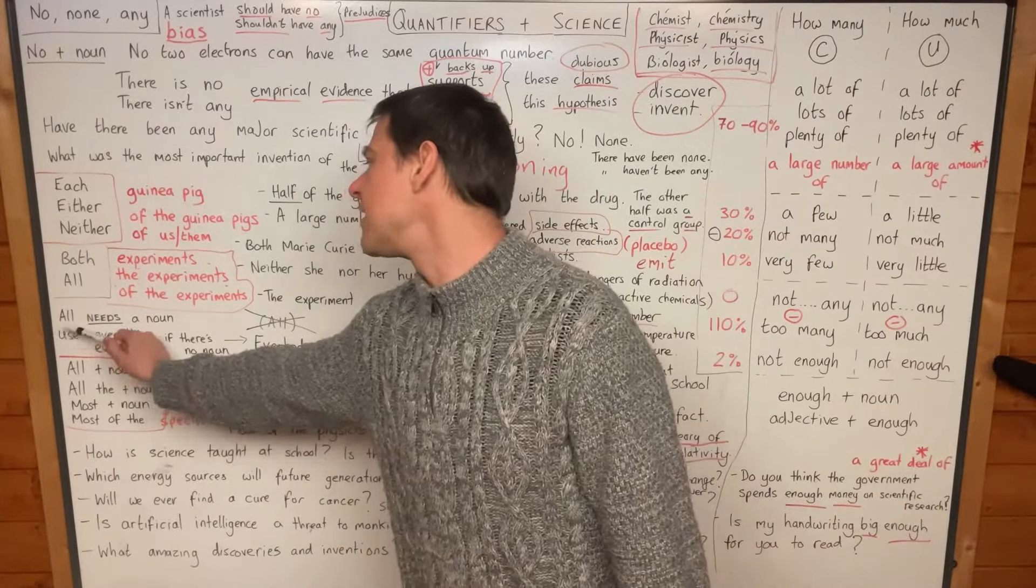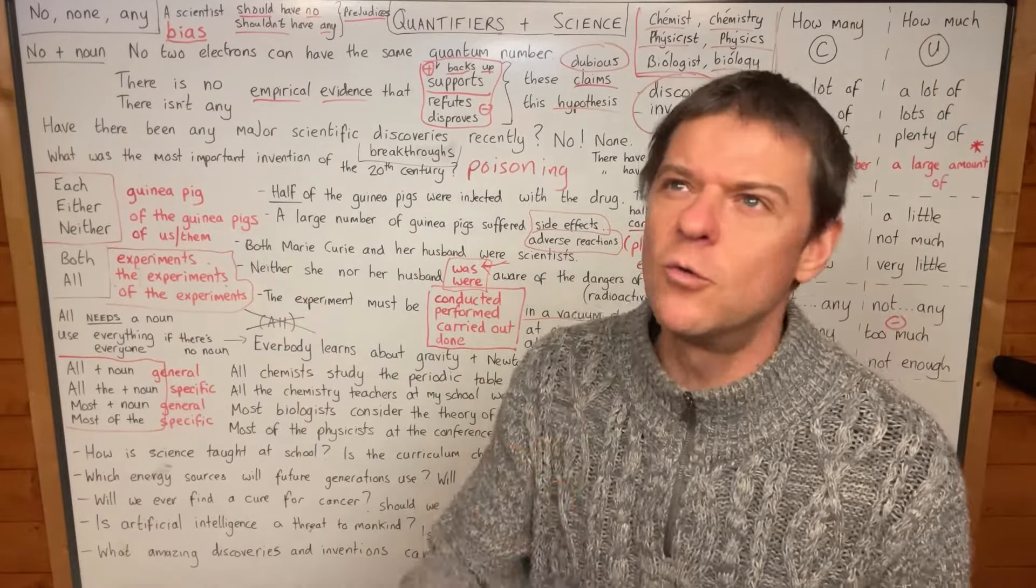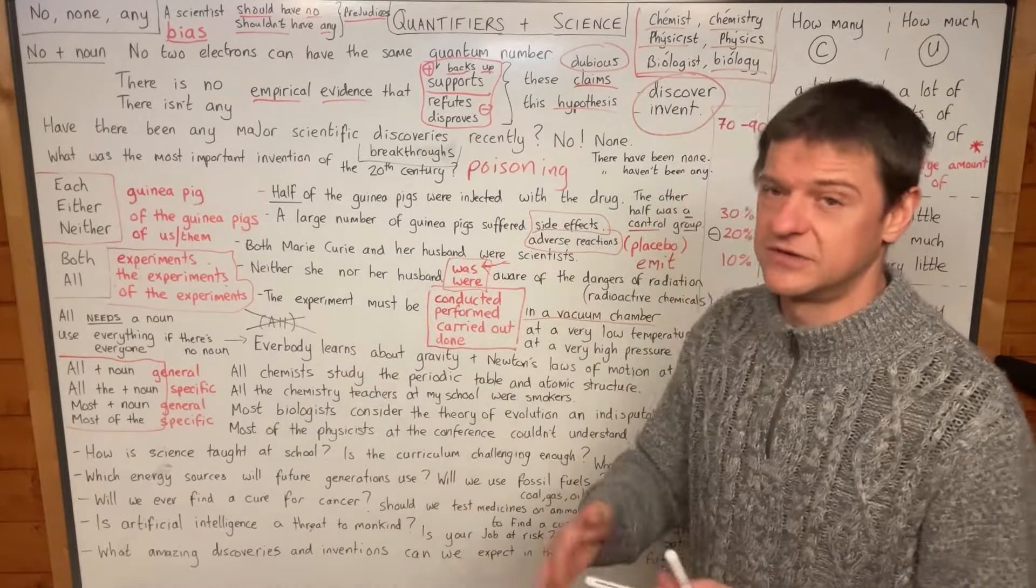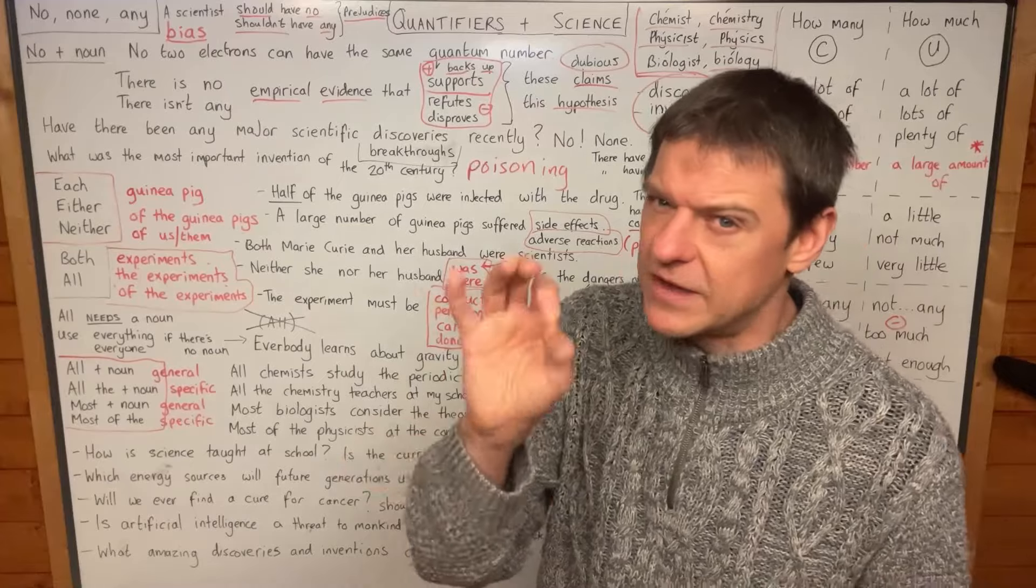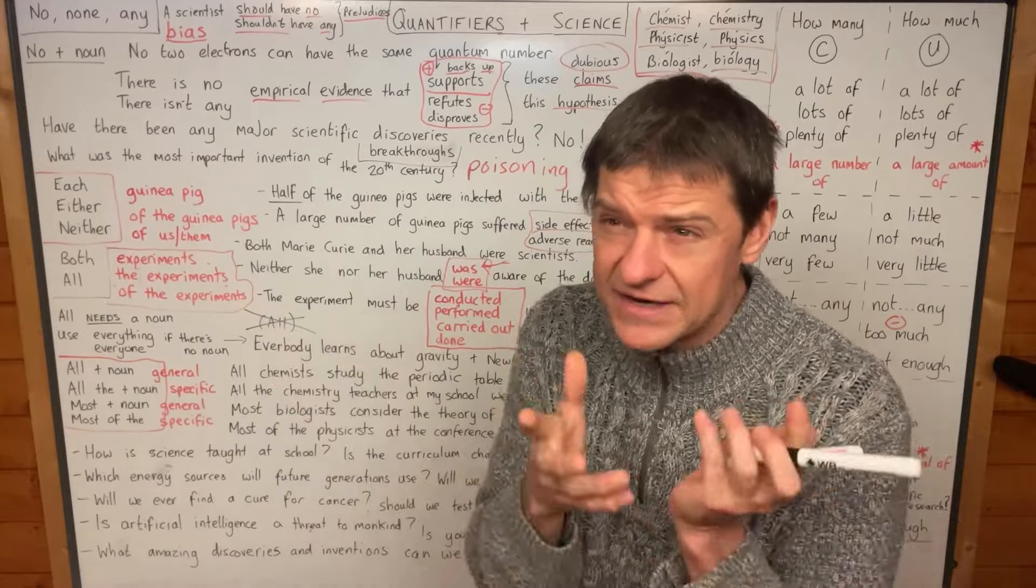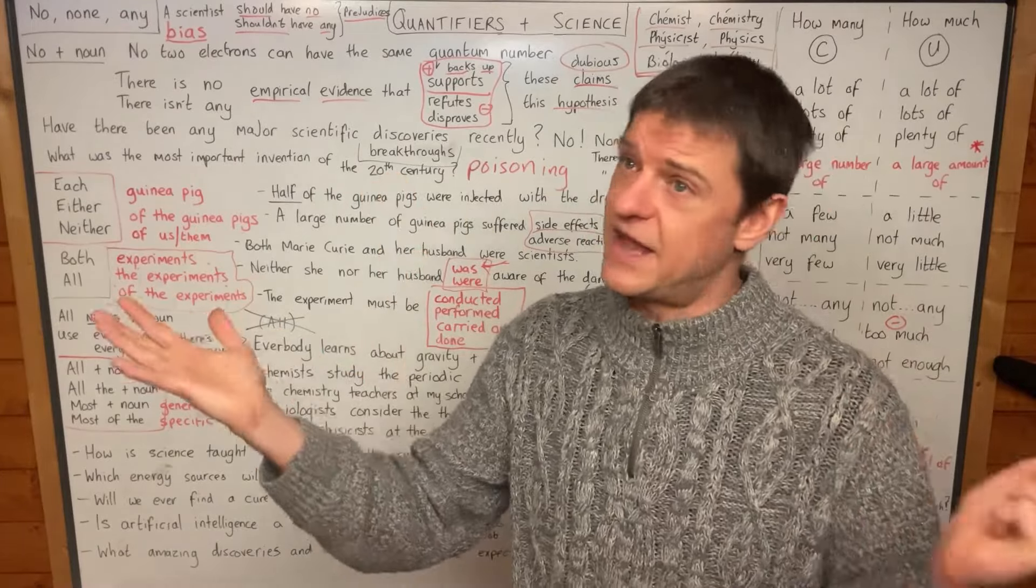Now, I want to make it clear that 'all' needs a noun most of the time. You can say 'we all know Newton's laws of motion,' for example. You can do it like that, we all know, but then we and all are joined together. So all does really have a noun. It has a pronoun when you say 'we all' or 'they all.'